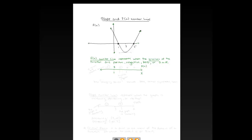To the left of 1, the y-values are positive. Continuing from left to right, to the right of 1 the y-values are negative until I get to x = 5, which is another zero, so I'll mark it with a Z. In between 1 and 5, the y-values are negative.